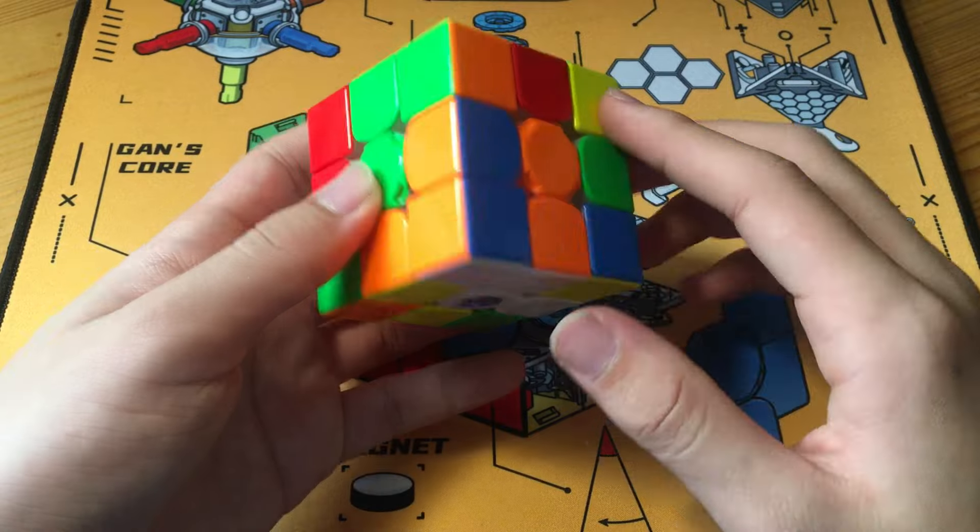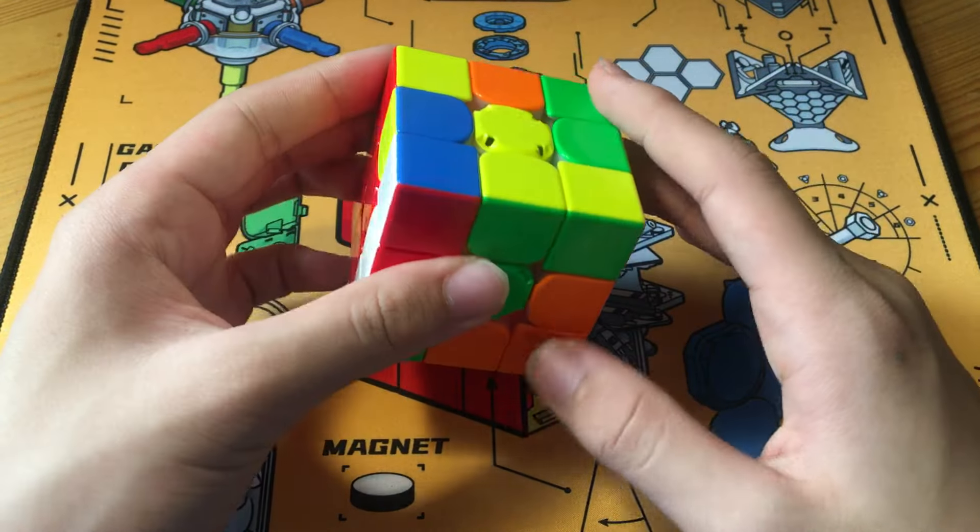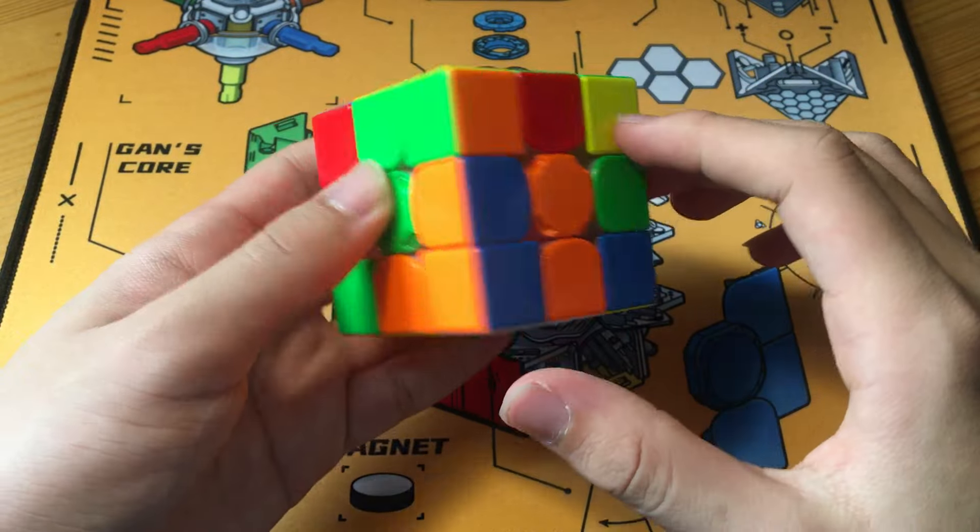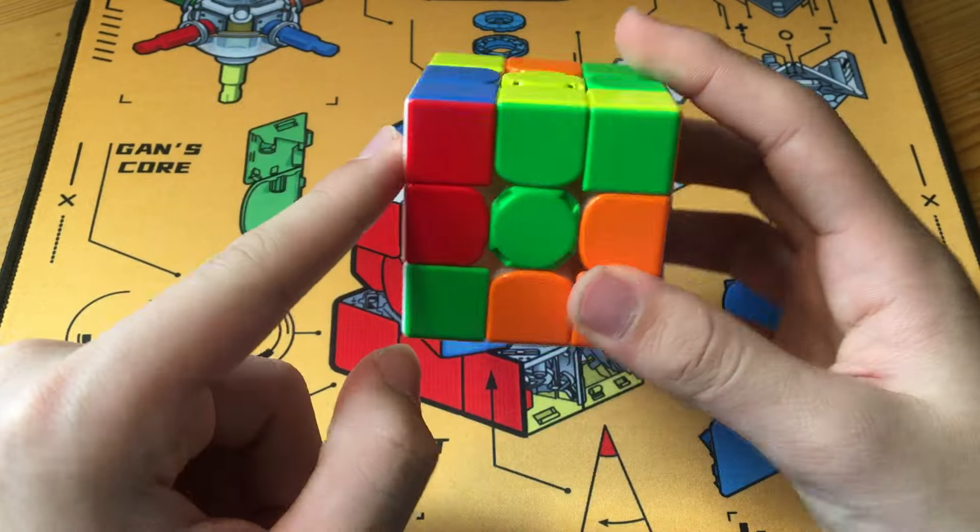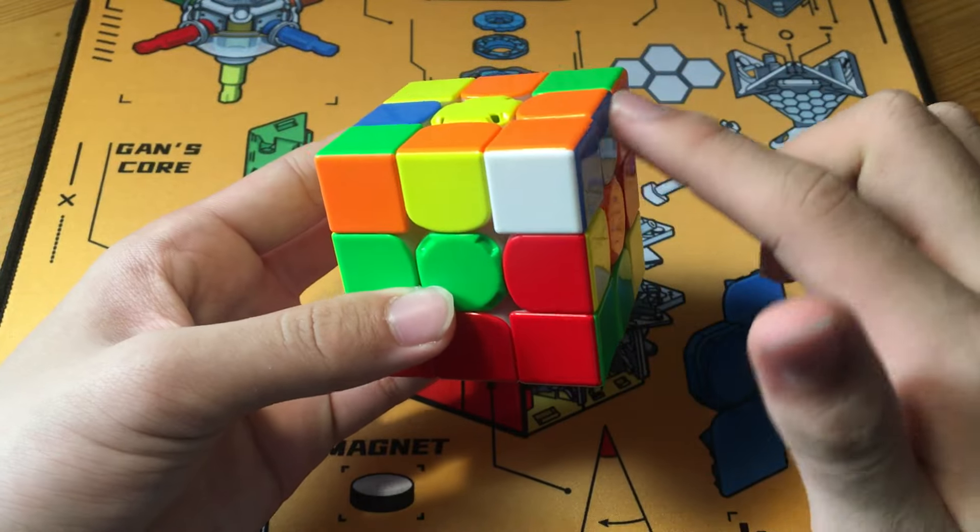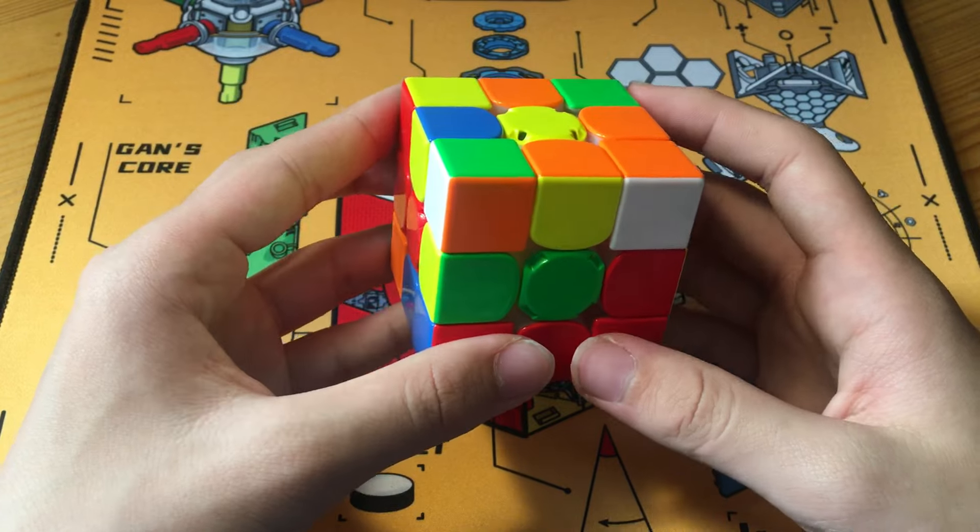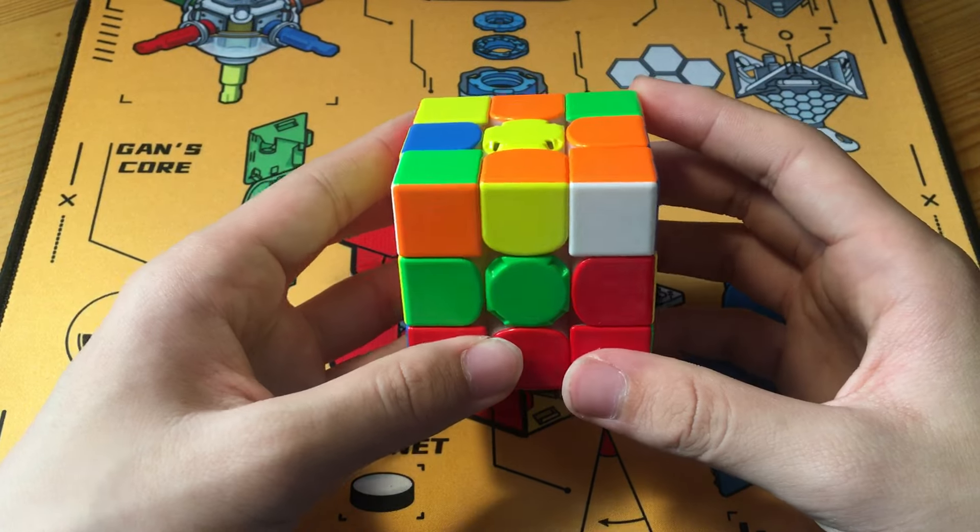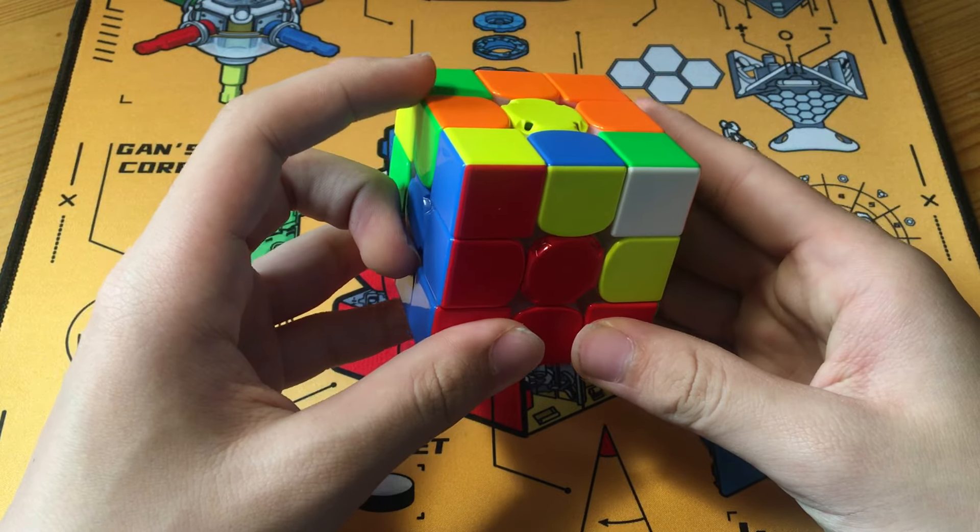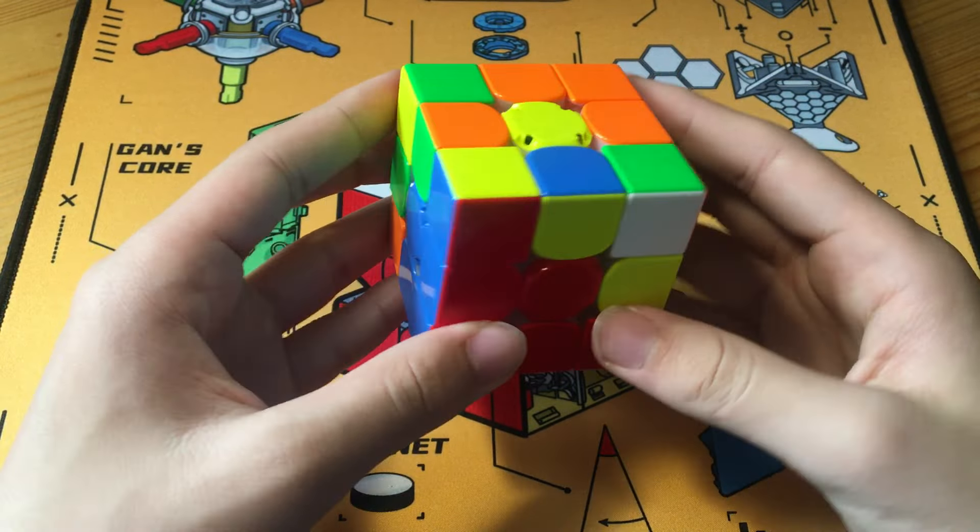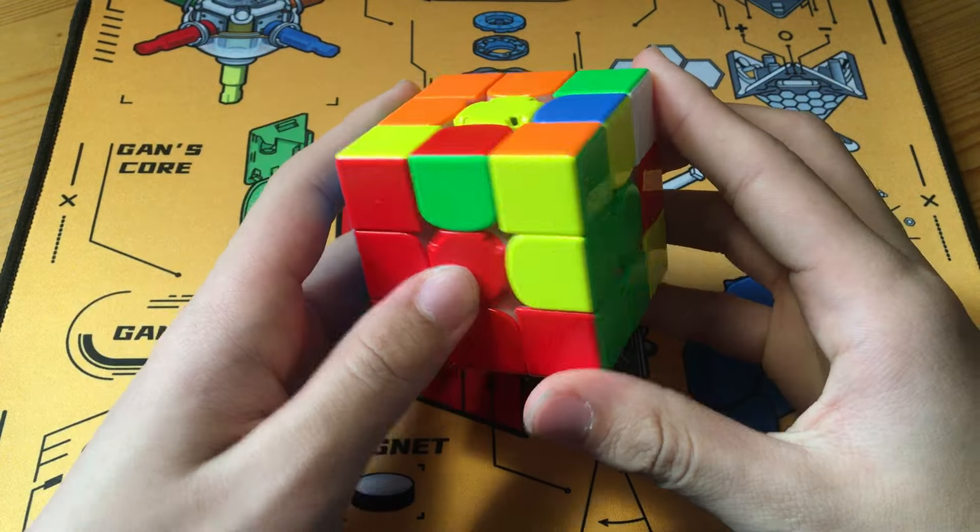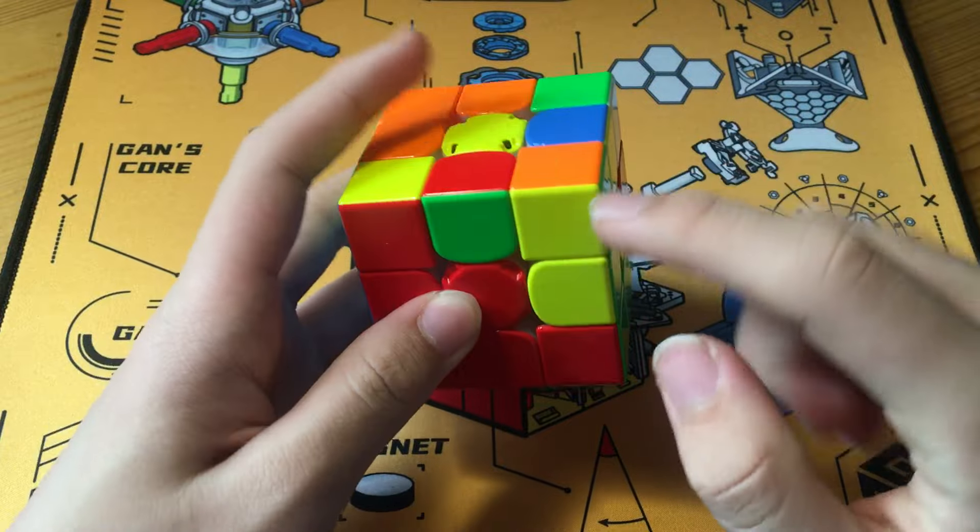And here, Kyle also notices this pair. So instead of doing something like this, which will break these two up, Kyle is deliberate about the order of solving this block and this edge, doing our F' to make sure that these two are paired up. And here's something he quite likely learned from Tmon, doing a wide U' instead of a D move and rotation, so that he can solve this pair into the back without any rotations.